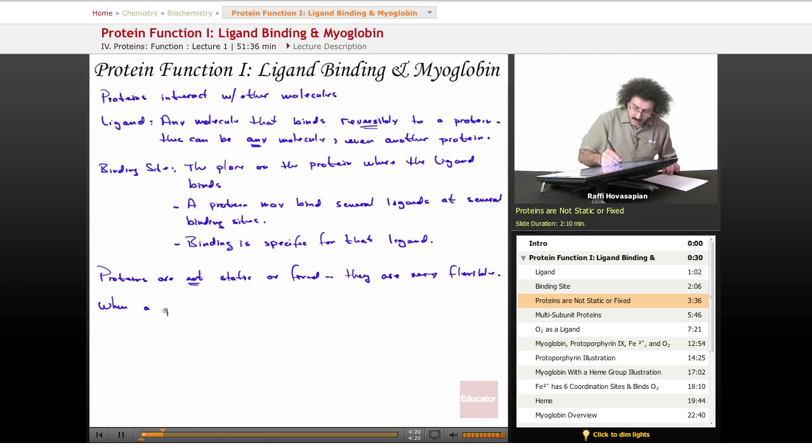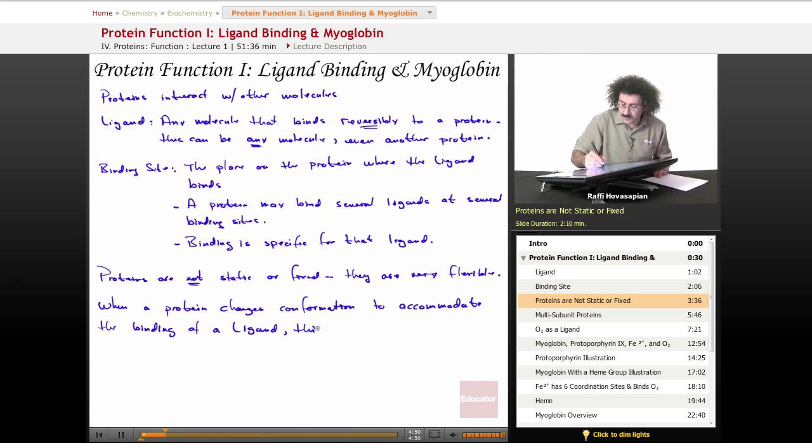Now, when a protein changes conformation to accommodate the binding of a ligand, this is called induced fit. You've often heard this term induced fit used to describe an enzyme from your other bio courses when you talked about enzymes. An enzyme, it's induced fit in order for it to bind its particular substrate. Well, it's the same thing. I mean, an enzyme is just a protein molecule.